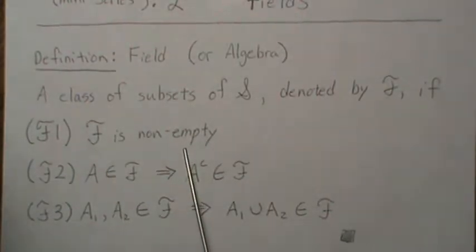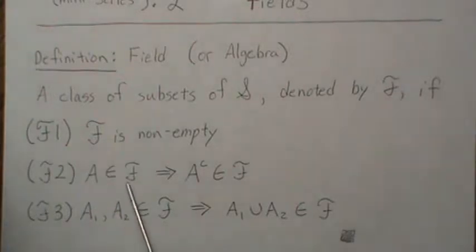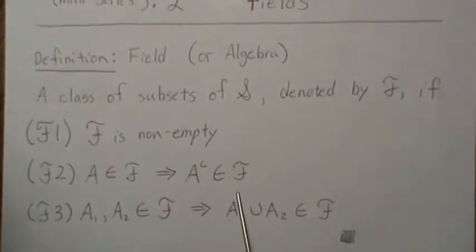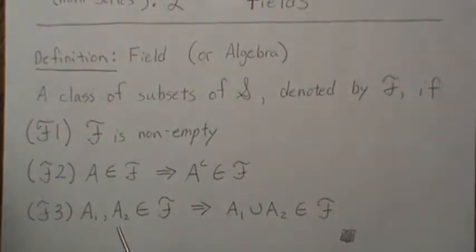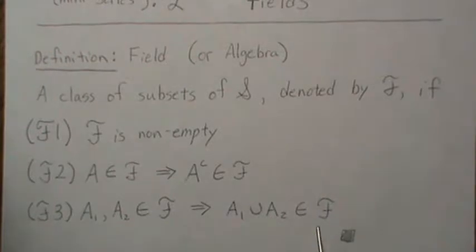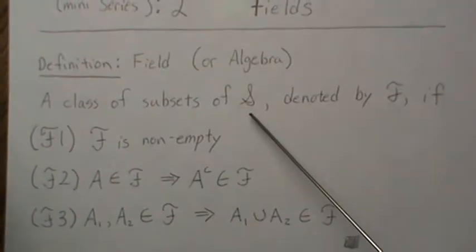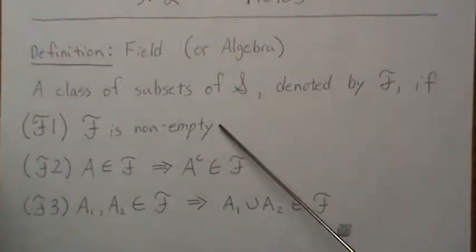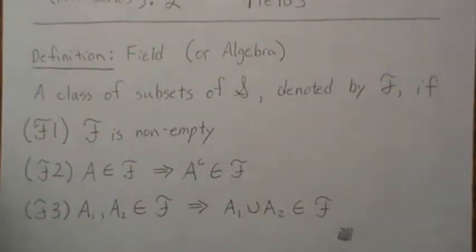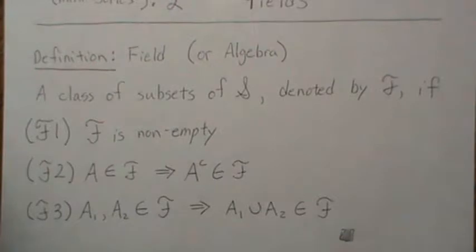The three properties are: F is non-empty. If the set A is in F, then A complement is in F. And if we have two sets in F, then their pairwise union is in F. And that's it. If our subset of our sample space meets these three criteria, then it's called a field.